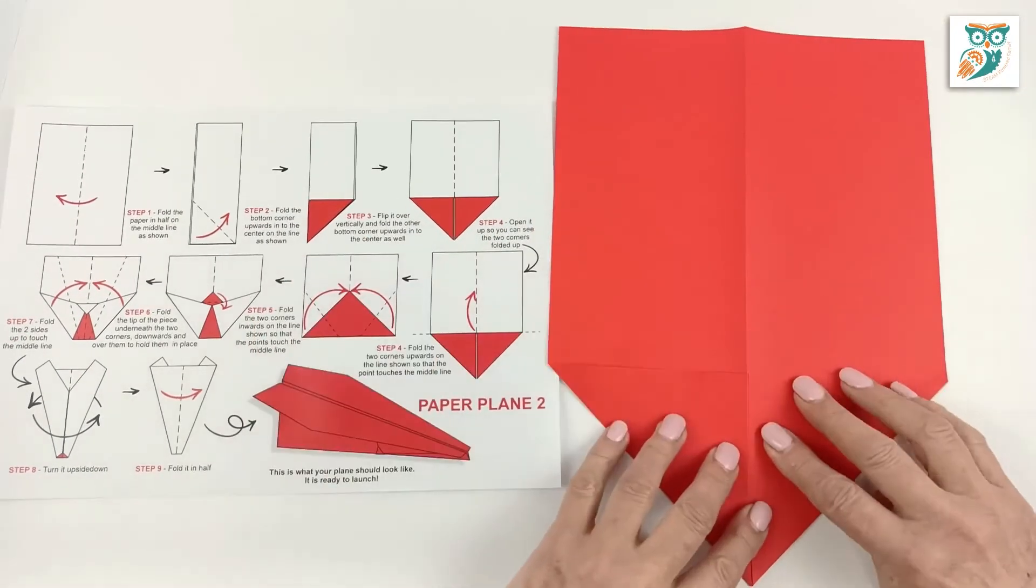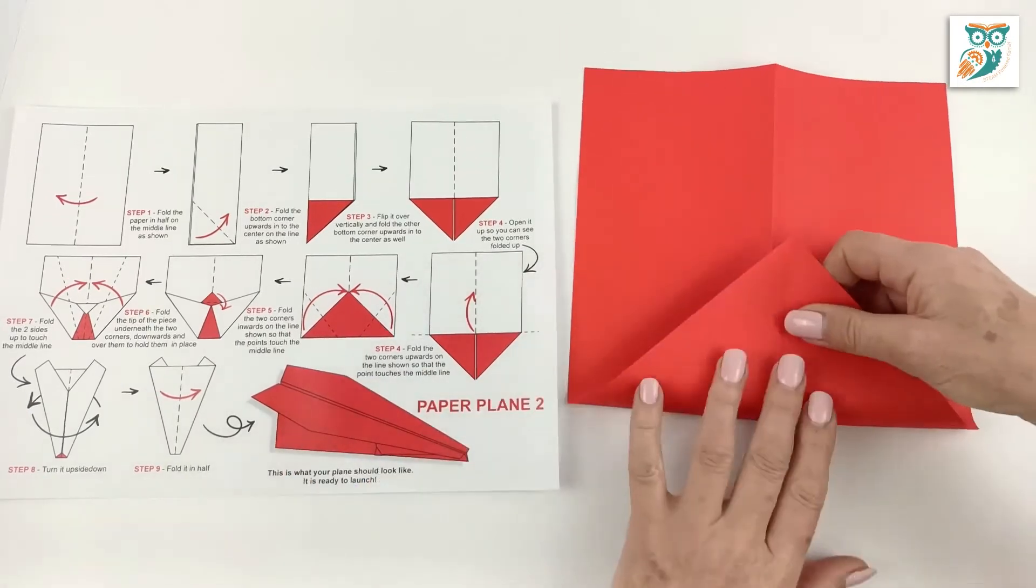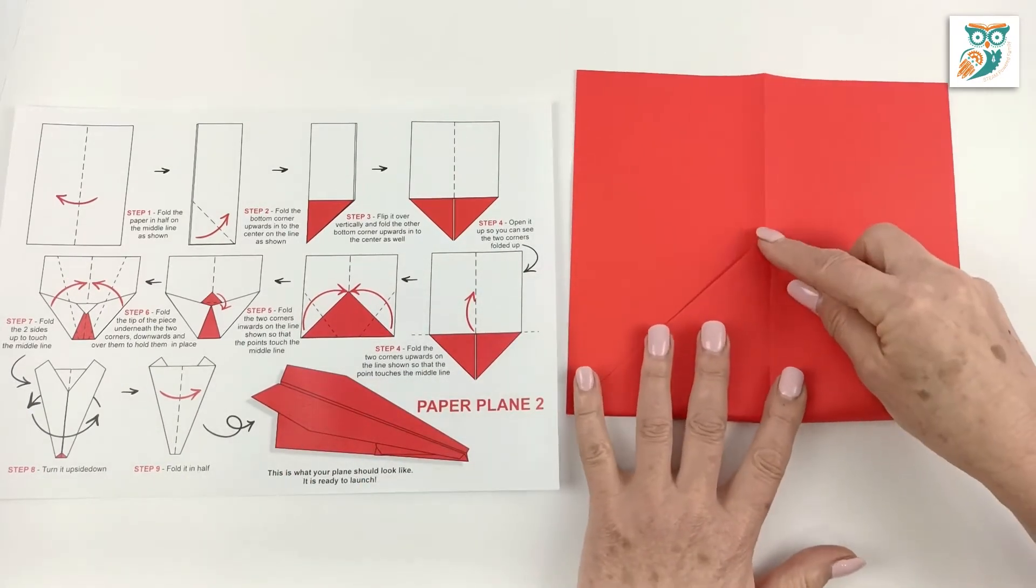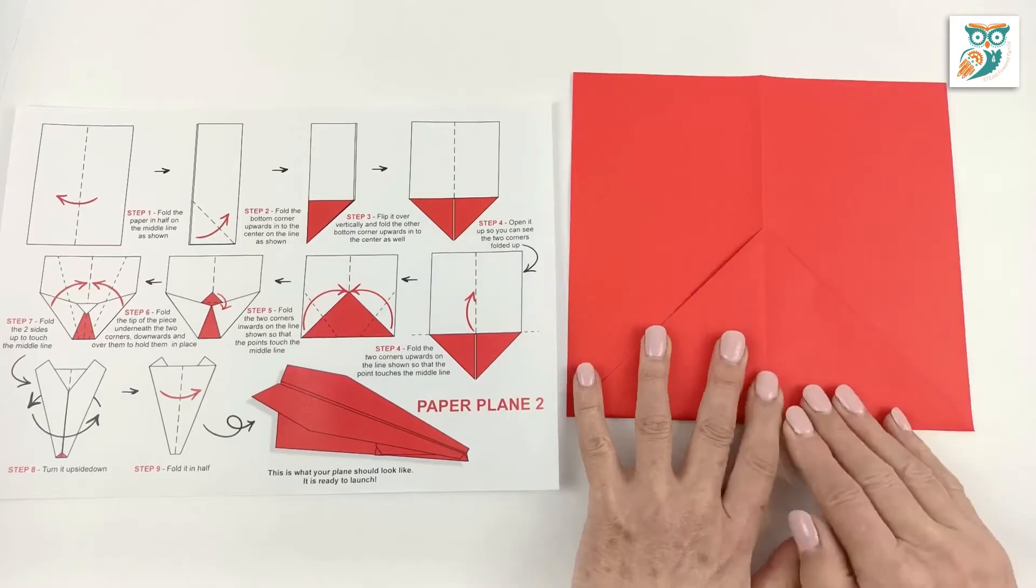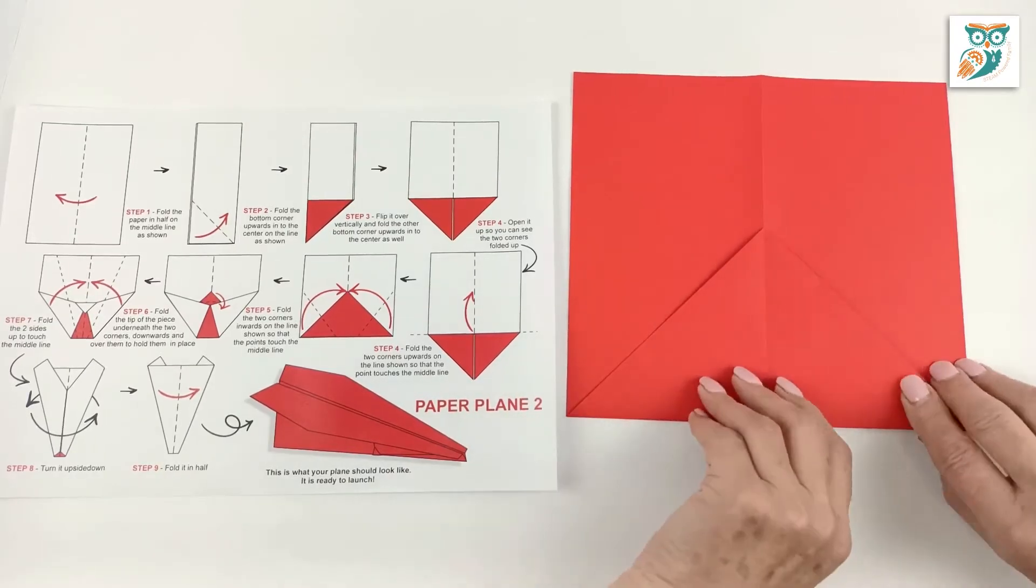Now open it up so you've got those folded edges up. And then we're going to grab that triangle that we made at the bottom and we're going to fold it up onto the center line. So we make a nice square shape.